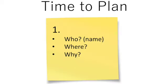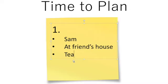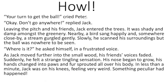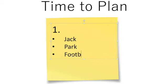We've listened to the story Howl several times and we've now made a plan. You are writing your own version, so you should have here the name of your main character — just imagine it's Sam. You've got where they are, for example at their friend's house, and why — they've gone there for tea or to play. If this was the original Howl, we would have Jack, Park, football. You should have something like that for the first post-it note.